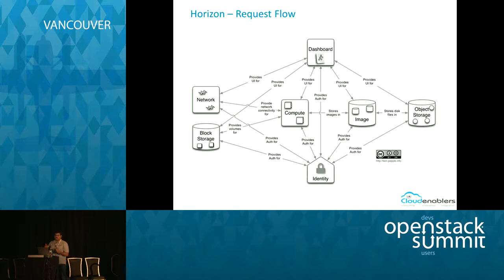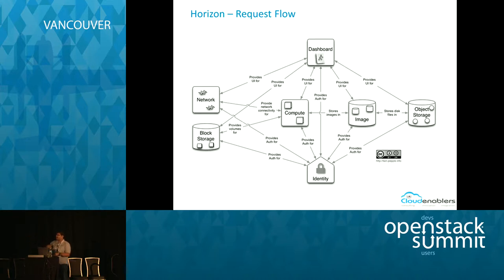How does the Horizon request flow work? When the user logs in, the first thing Horizon does is reach out to Keystone to get authentication done — credentials are validated, and the user gets a token and a service catalog. The service catalog lists the different services the user is authorized to use. Authentication and authorization is handled by Keystone (identity service), and then with the token and service catalog, Horizon can reach out to services like Nova, Glance, or Swift to perform actions.